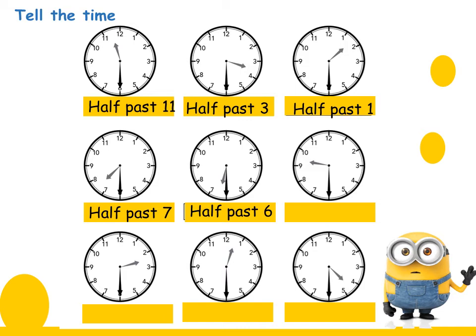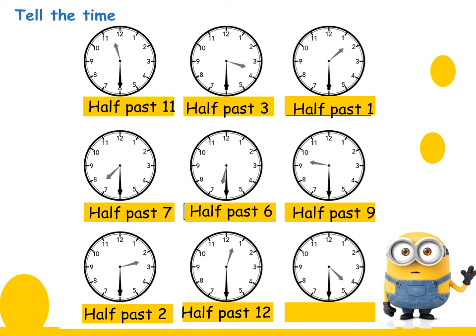The next one: the short hand on 9 and the long hand on 6, so it's half past 9. Excellent. The next: short hand on 2 and long hand on 6, so it's half past 2. Here the short hand is between 12 and 1, so we choose the smallest one, which is 12 — it's half past 12 because the long hand is on 6. The next one: it's half past 4. Excellent, Primary 2.